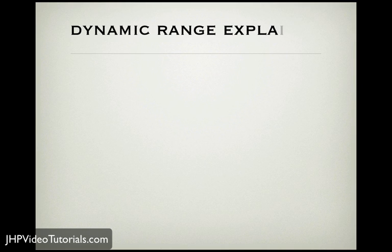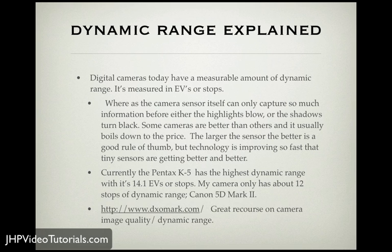Dynamic Range Explained: digital cameras can only capture so much dynamic range, measured in EVs or stops. The more dynamic range the camera has, generally, the more money it costs. The Pentax K5 is a pretty solid camera with extremely high dynamic range — it can do 14.1 EVs. My camera is the Canon 5D Mark II, which has 11.9 stops of dynamic range. The Pentax is one of the tops these days. If you go to dxomark.com, you can enter your camera and it'll tell you how much dynamic range it has along with a bunch of other specs.